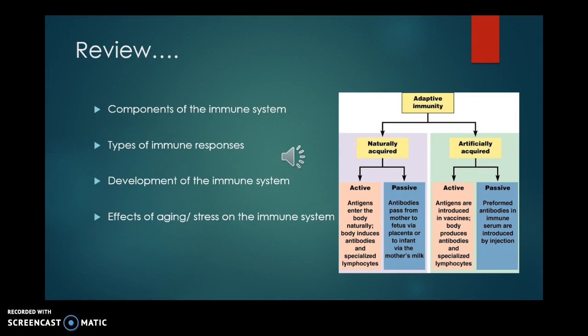The immune system develops over time. When babies are born they carry the antibodies of their mother — that's what we call passive immunity. As a child matures, their immune system will start to develop. On the other end of the age spectrum, when you age or are under a lot of stress, you'll see a decrease in your ability to respond to infection or foreign invaders.